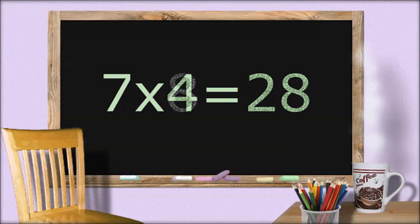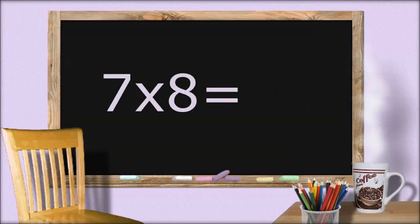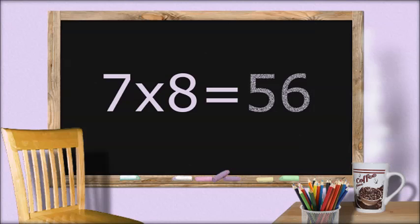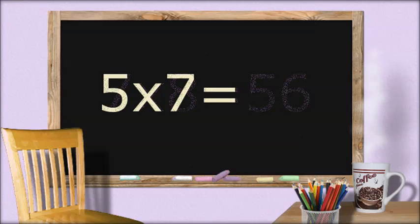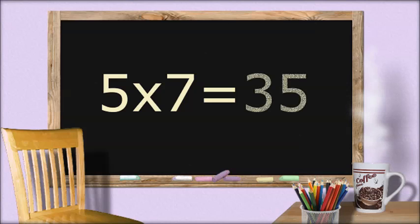7 times 8 equals... 56. 5 times 7 equals... 35.